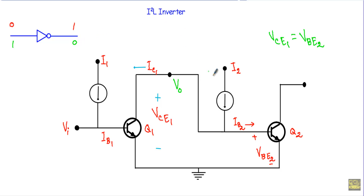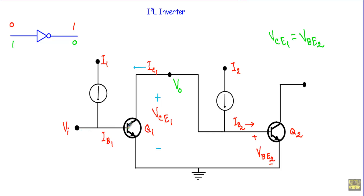In the case of an inverter or NOR gate, this is the circuit structure of an integrated injection logic inverter circuit. The circuit uses two transistors Q1 and Q2. Current source I1 will inject current at the base terminal of transistor Q1, and current source I2 will inject current into the base terminal of transistor Q2. That is why this I²L logic is sometimes known as current steering or current injection logic.